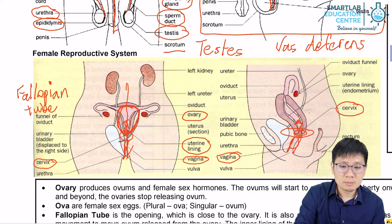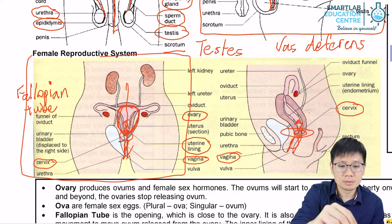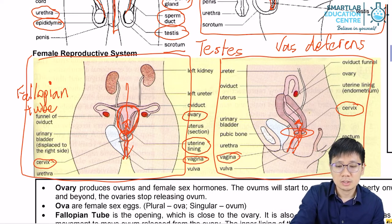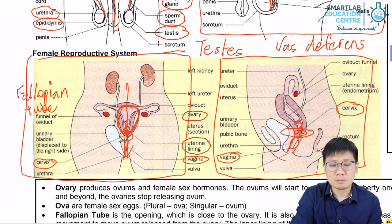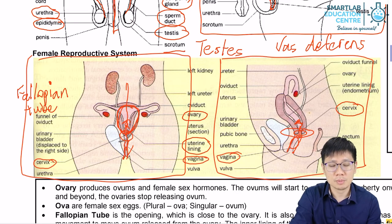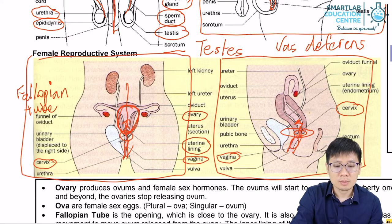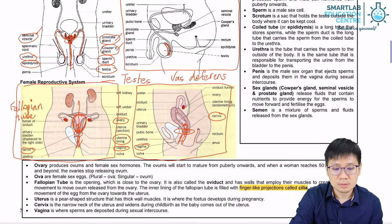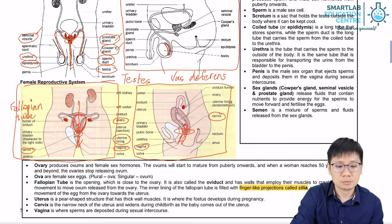With the left side we have a frontal view, and on the right side we have a side view of the anatomy. You need to familiarize yourself with both views, because just like with the male reproductive system, you may be tested on both.